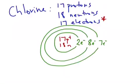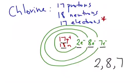This is the completed representation of chlorine. We have 17 protons and 18 neutrons in the nucleus, and we have the 17 electrons arranged 2 in the first shell, 8 in the second, and 7 in the third. So the electron configuration of chlorine is 2, 8, 7.